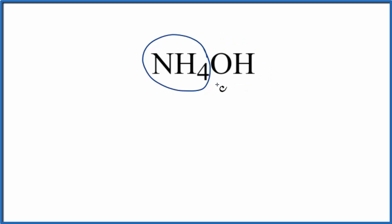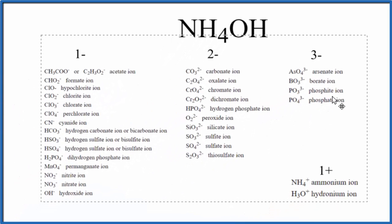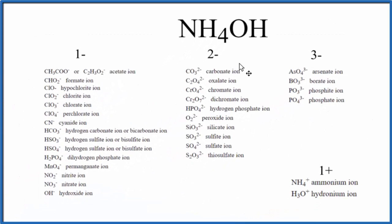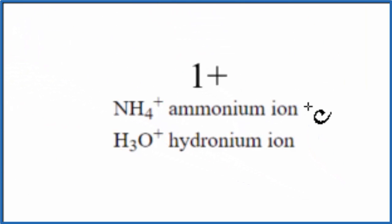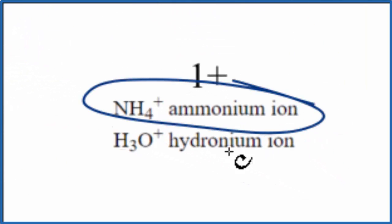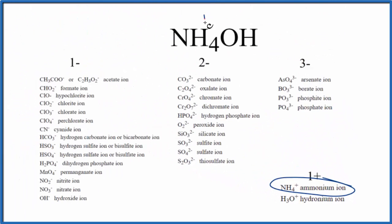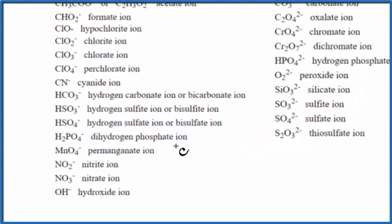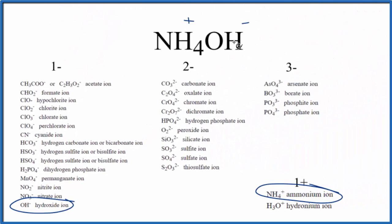If you don't know these ions, some teachers let you use this table here, others want you to memorize it, but we can find ammonium here on this table. Ammonium is one of the few positive polyatomic ions — it's right here — so NH4 has a positive charge. And the hydroxide, way down here, that's OH, which has a negative charge: OH minus.